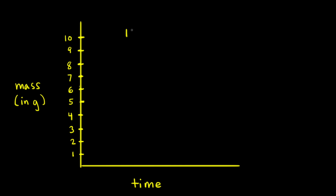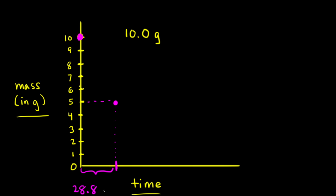Let's say we start with 10 grams of Strontium-90. On the y-axis we'll put the mass of our Strontium isotope in grams, and on the x-axis we'll have time. So when time is equal to zero, we have 10 grams. Since the half-life of Strontium-90 is 28.8 years, if we wait 28.8 years, we'll go from 10 grams to 5 grams — the next point on our graph at 28.8 years.